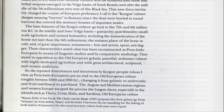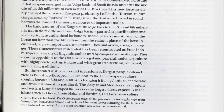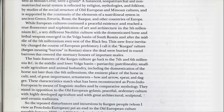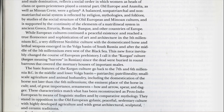From Rihanna Eisler, in her book The Chalice and the Blade (1987), proposes the term 'gilanic' — from 'gyne' (woman) and 'andros' (man), with the letter L between the two standing for the linking of both halves of humanity — for the social structure in which both sexes are equal. A balanced, non-patriarchal, non-matriarchal social system is reflected by religion, mythologies, and folklore, by studies of the social structure of old European and Minoan cultures, and is supported by the continuity of elements of a matrilineal system in ancient Greece, Etruria, Rome, the Basque, and other countries of Europe.